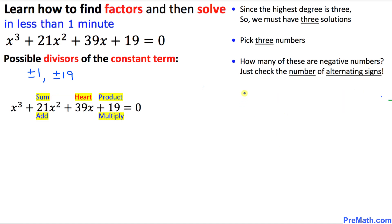So those three numbers are simply 1, 1, and 19. If we add these three numbers they add up to 21. And if we multiply all three numbers, 1 times 1 times 19, we get 19.